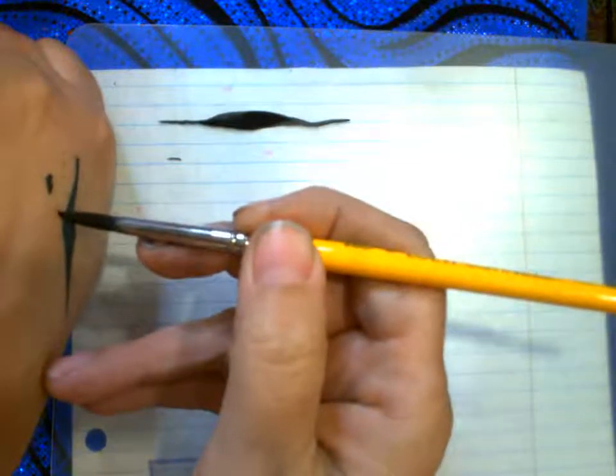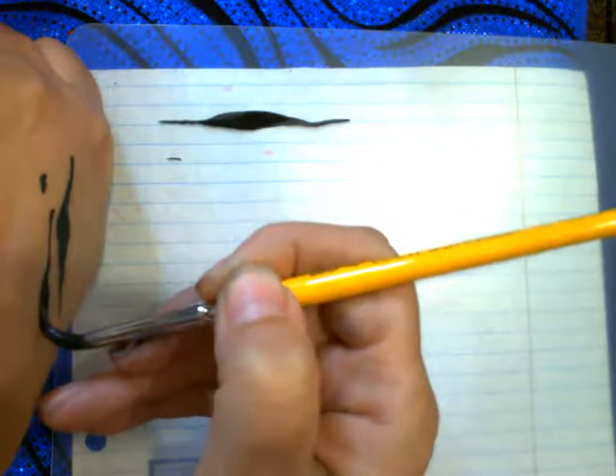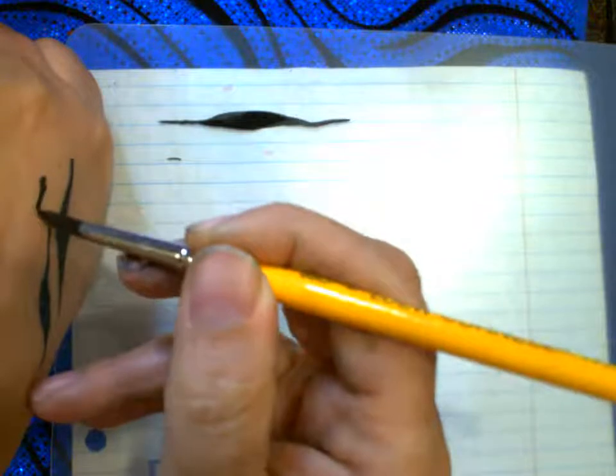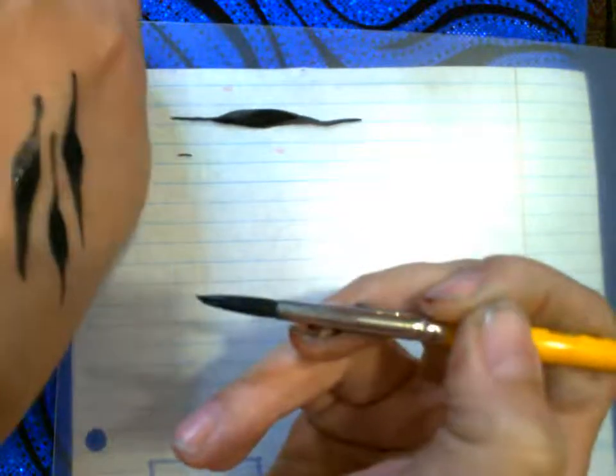And then you can tippy toe next to the wide area, and then lay it down thicker here, and then pick it up. And then this is how you make a series of zebra stripes.